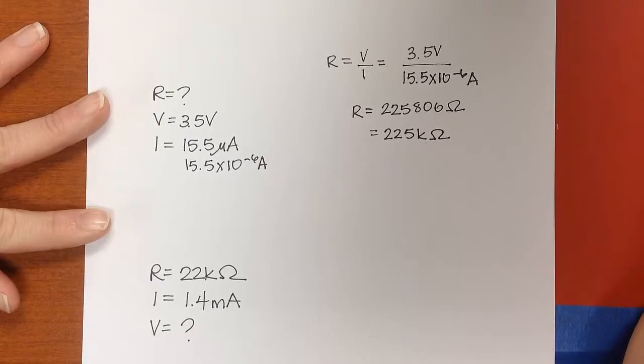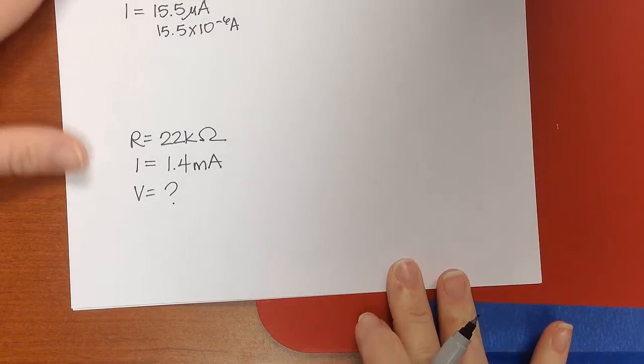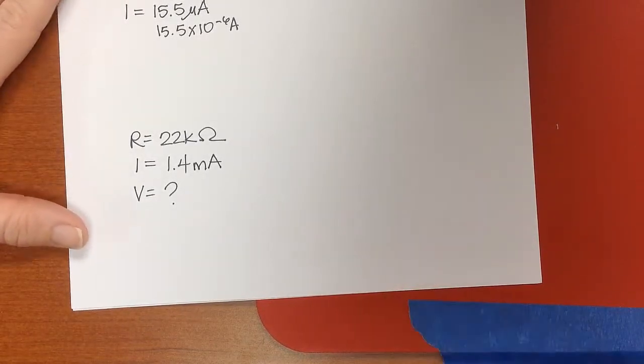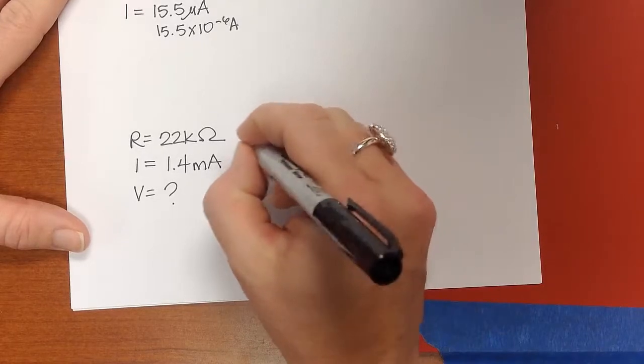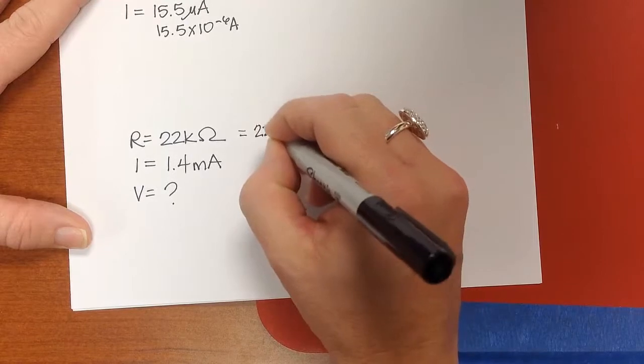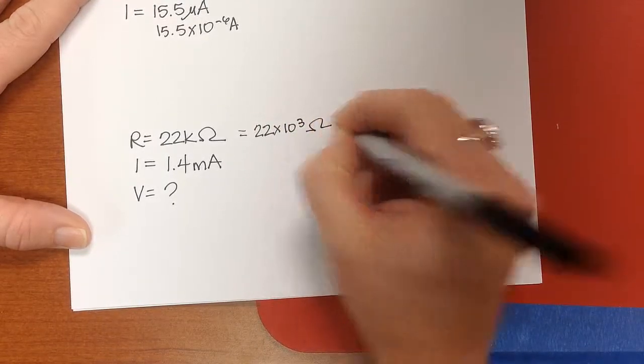And then finally, for the last problem, we want to know V. We have R and I, but they are not in our fundamental units. So 22 kilo-ohms would be 22 times 10 to the 3rd Ohms.